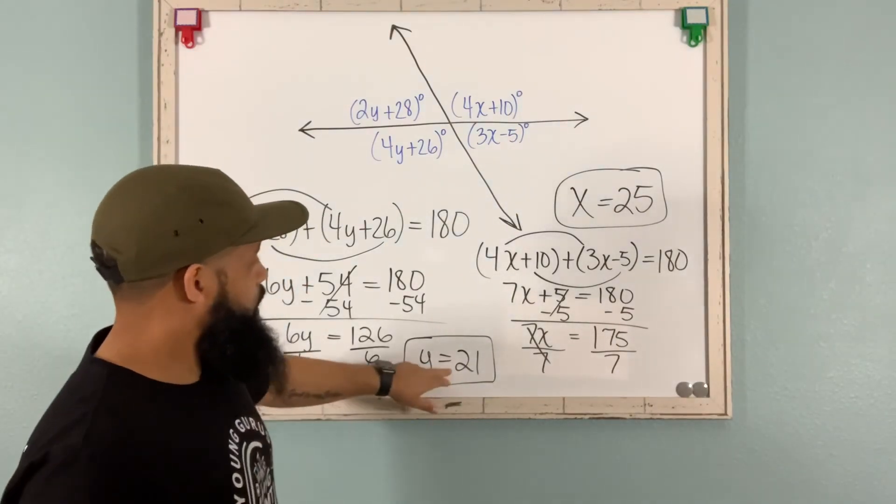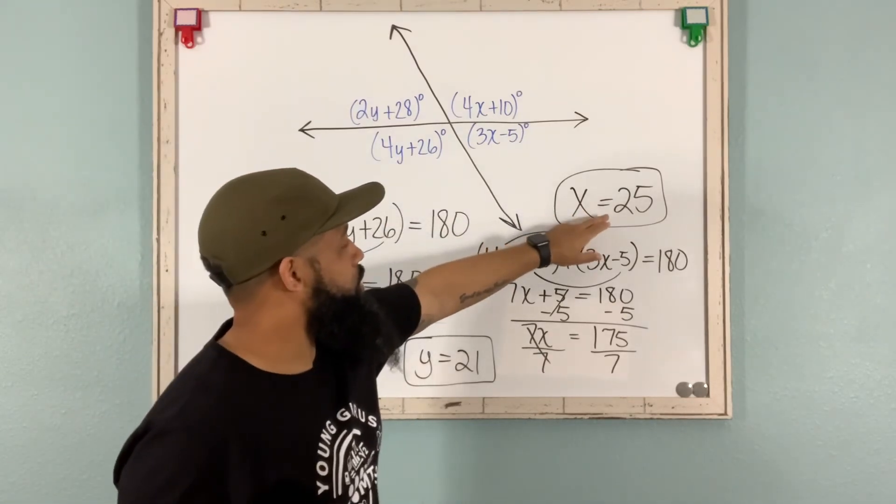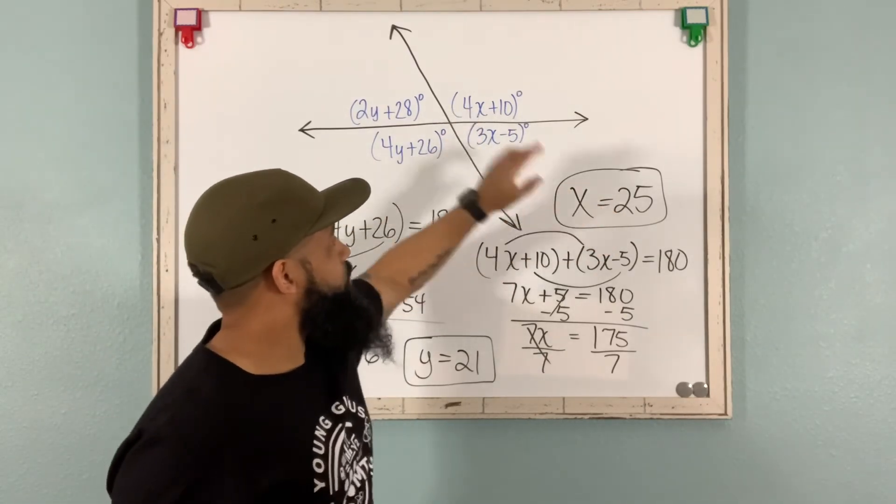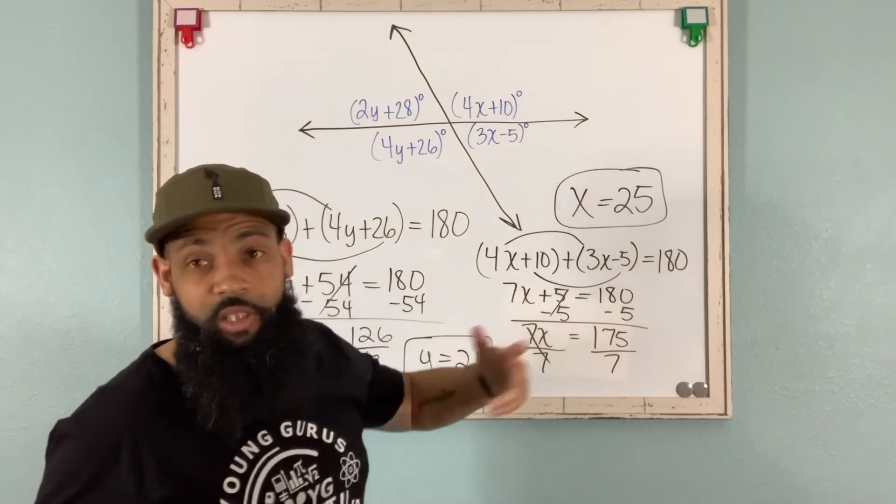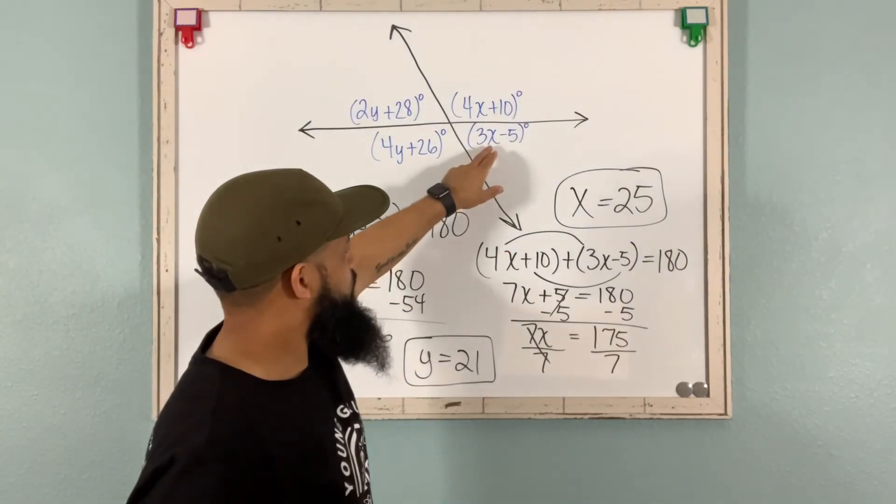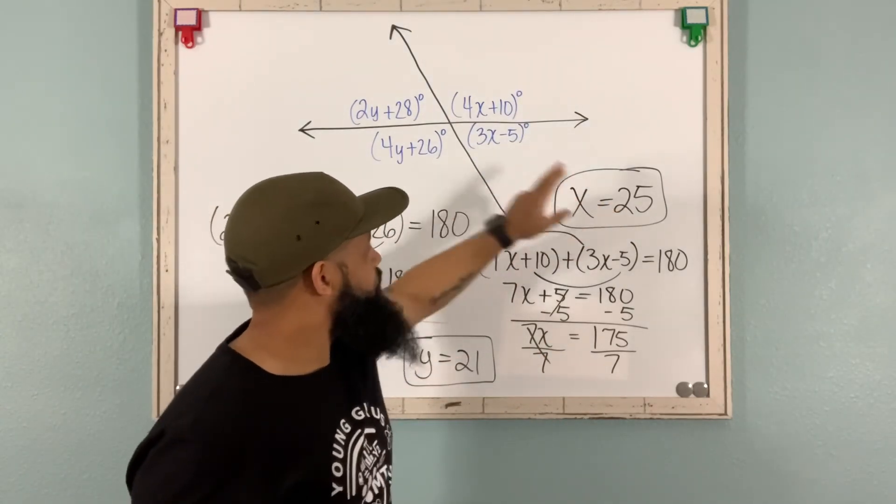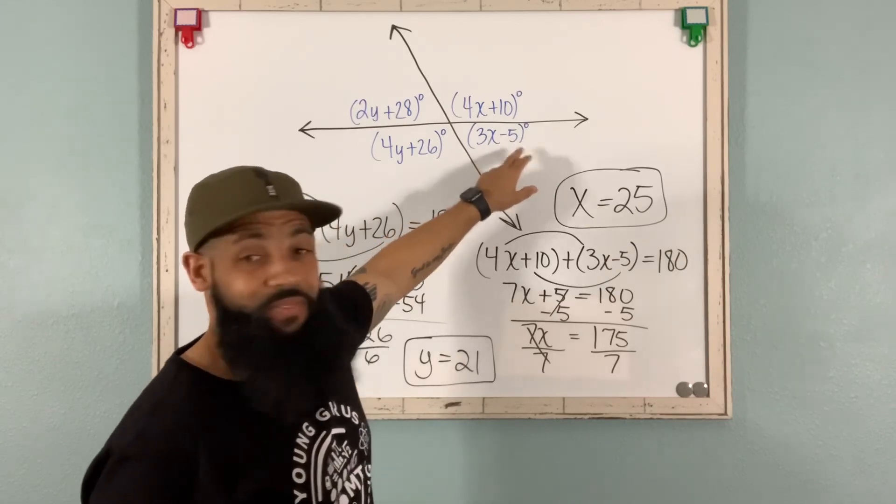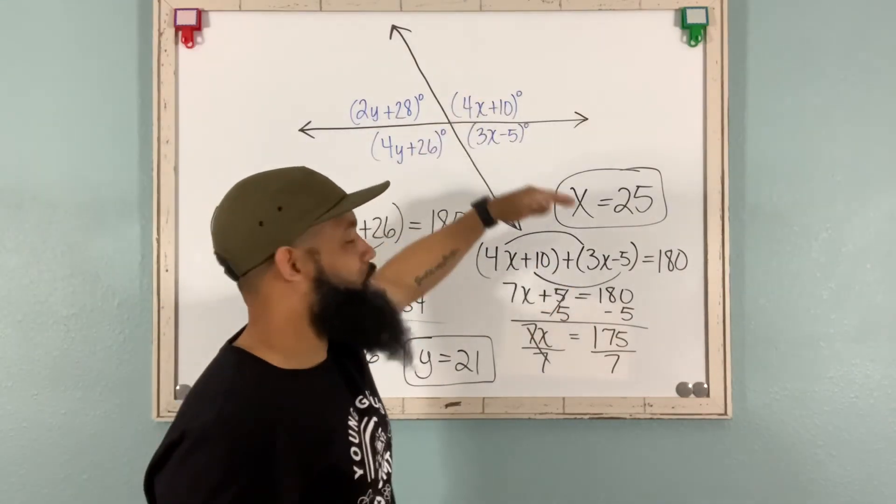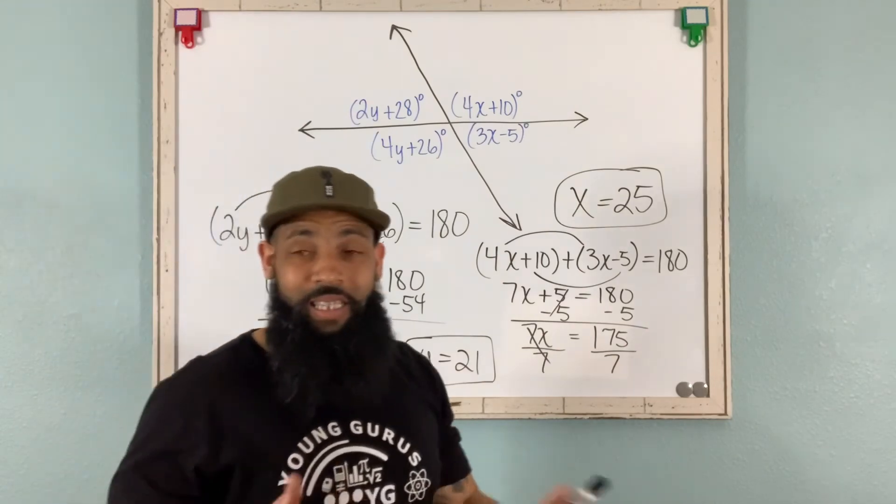4 times 25 is 100. 100 plus 10 is 110. And then 3 times 25 is 75. 75 minus 5 is 70. So 110 plus 70 does give you 180. That's a linear pair.